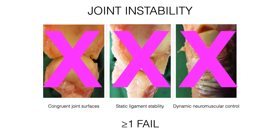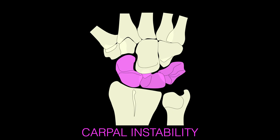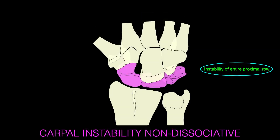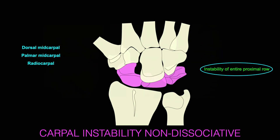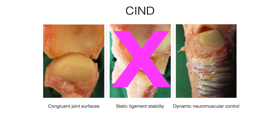Joint instability may be seen if one or more of these factors fail. The type of instability seen in the carpus is defined in relation to the proximal carpal row. If there is an instability of the entire proximal carpal row in relation to the distal row, it is a CIND — carpal instability non-dissociative — seen, for instance, in palmar and dorsal mid-carpal instabilities. In these instances, the joint surfaces are usually congruent and the muscle control is in place, but the static stability from ligaments has failed.